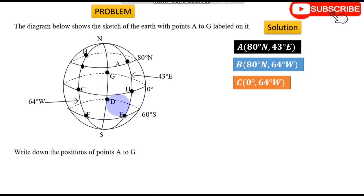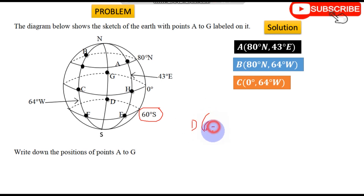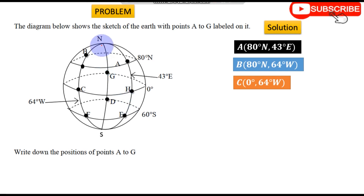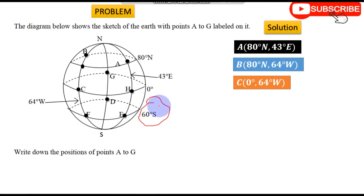For point D, the dotted line is a continuation of the latitude shown on the globe, which is latitude 60 degrees South. So for D we say 60°S. Then the longitude for D — looking at where it is coming from, this line is the Greenwich Meridian, so it is zero degrees. Therefore D is 60°S, 0°.